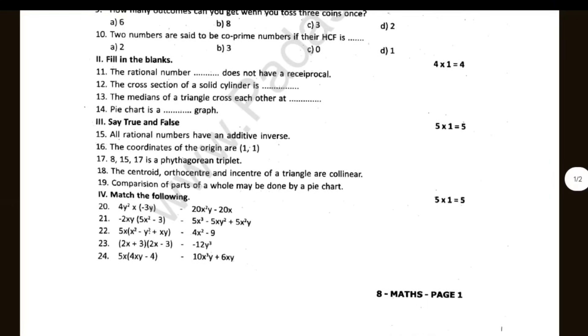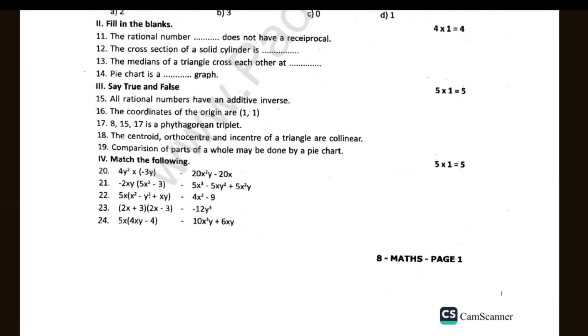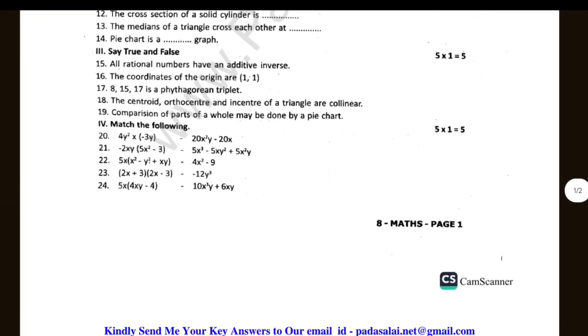True or False: All rational numbers have an additive inverse. The coordinates of the origin are 1,1. 8, 15, 17 is a Pythagorean triplet. Centroid, circumcenter and incenter of a triangle are collinear. A comparison of parts of a whole may be done by a pie chart.